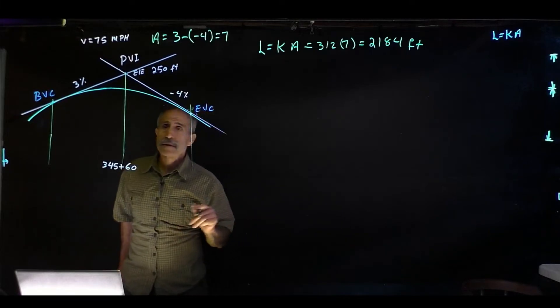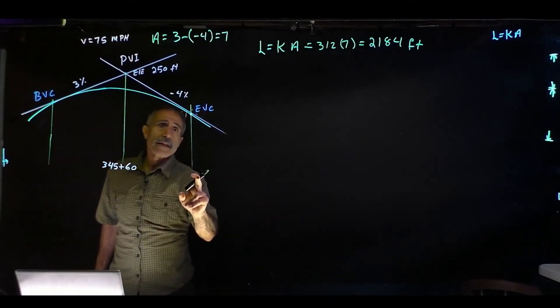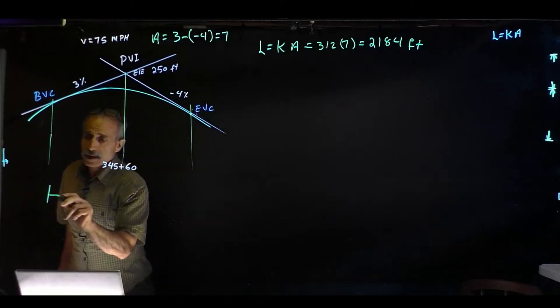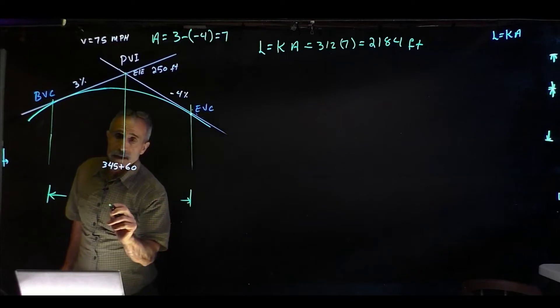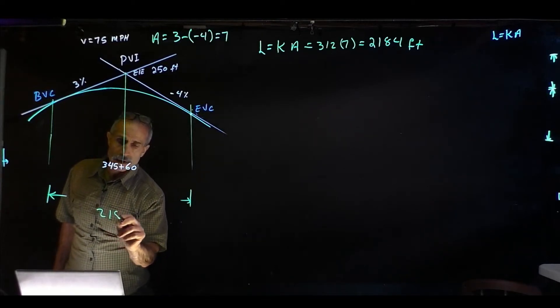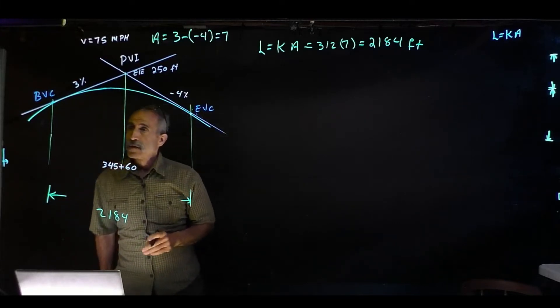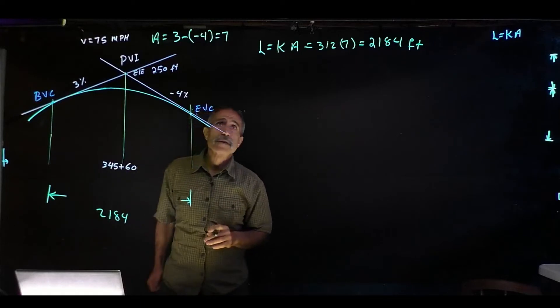What that means is our distance between BVC, beginning of the curve, and end of the curve, which is L right here, is 2184. And this will be the center of it.